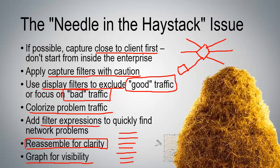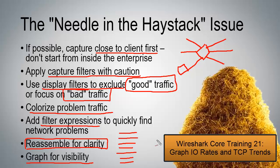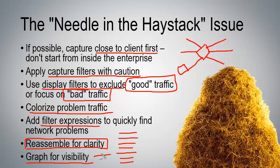We have a course called Graph I/O Rates and TCP Trends, which is an excellent place to learn how to build the golden graph and identify problems using graphing. Now let me take you out to Wireshark — in one of the earlier sections I created a display filter to focus in on bad traffic, and now I'm going to turn that filter into a filter expression button.